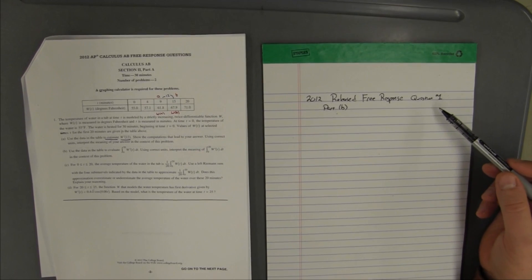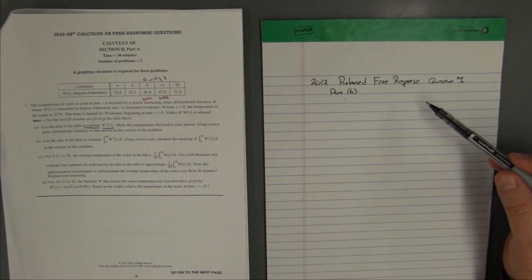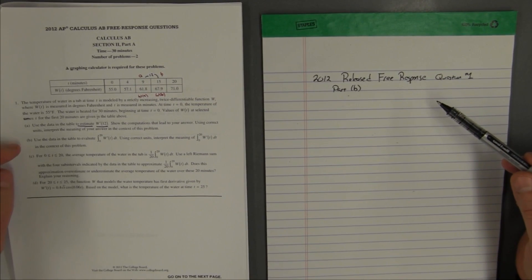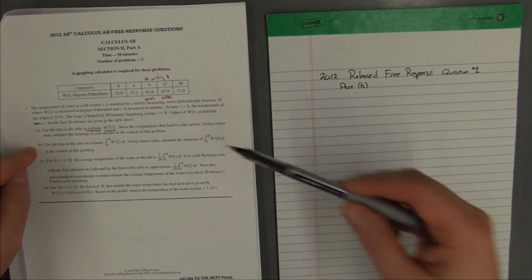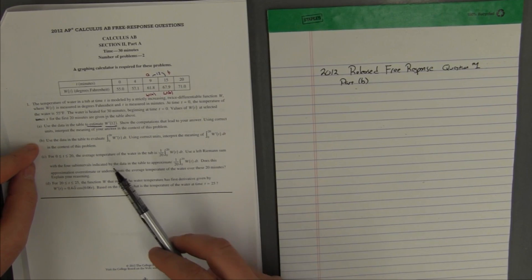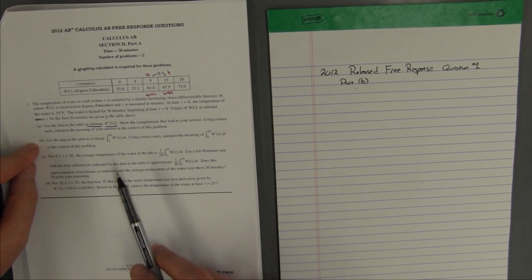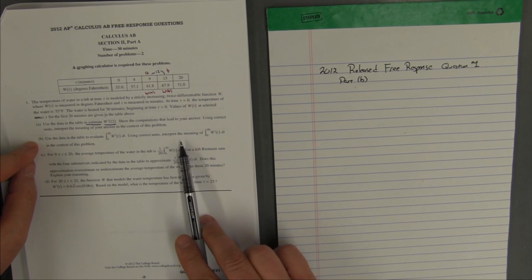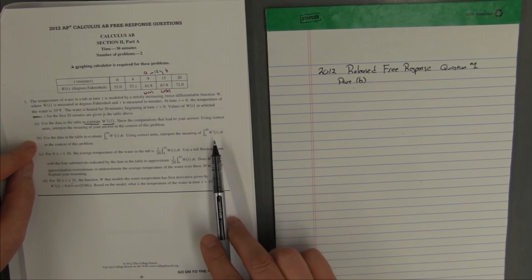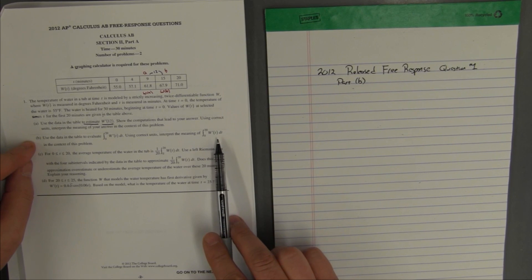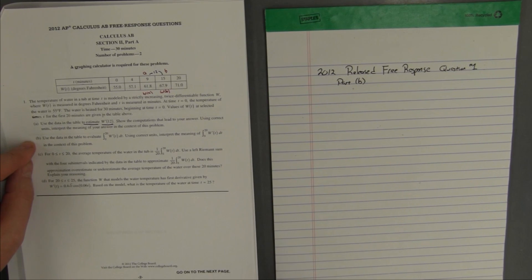So, now we're doing the 2012 released free response question number one, part B. Part B says, use the data in the table, here's our table, to evaluate the integral from 0 to 20 of w prime of t dt using correct units, interpret the meaning of the integral from 0 to 20 of w prime of t dt in the context of this problem.